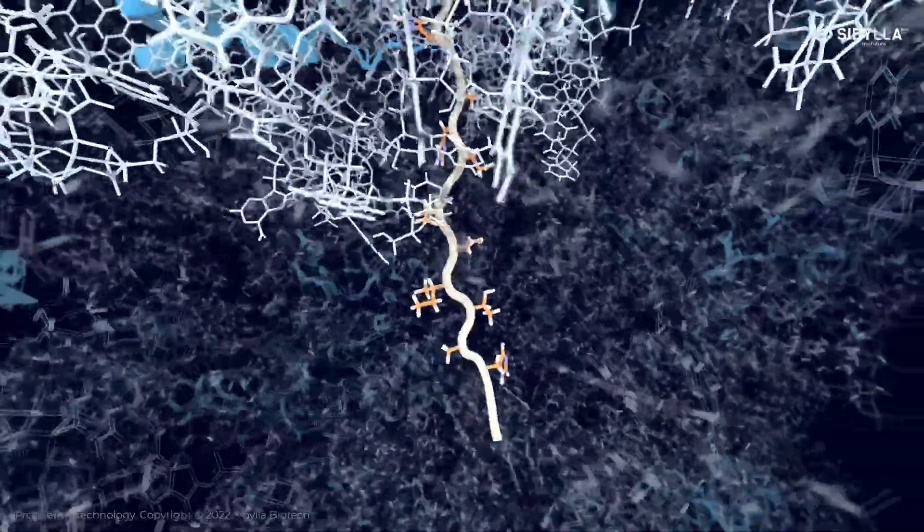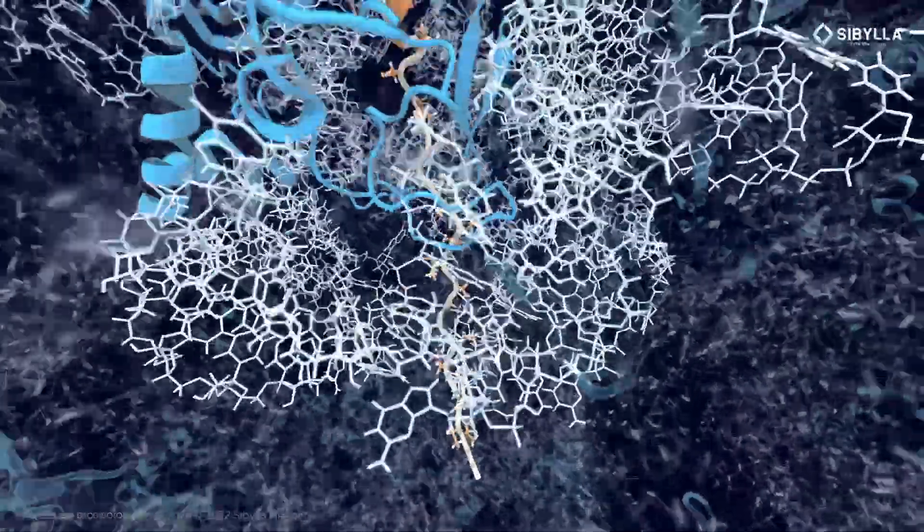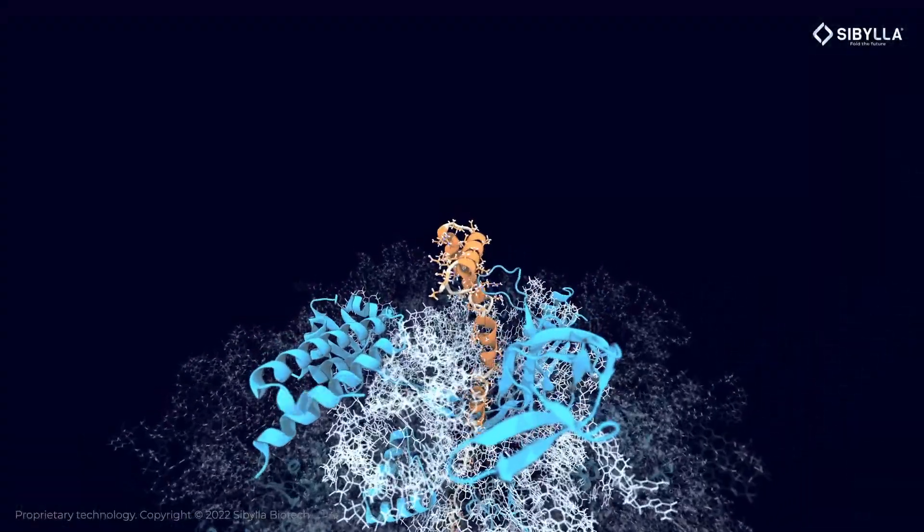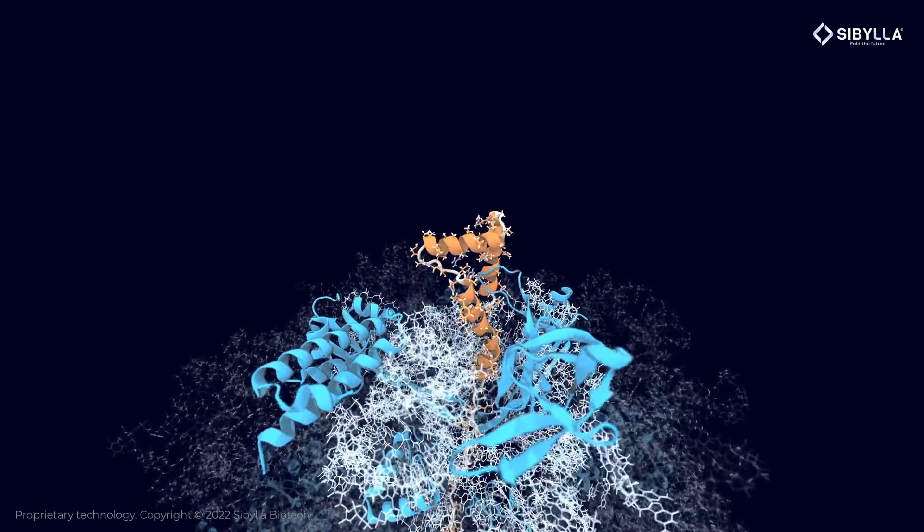This is the beginning of one of the folding simulations of a model protein. As it is possible to see, the protein folds from the N-terminus to the C-terminus in a sequential manner.